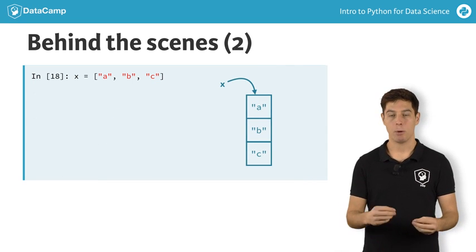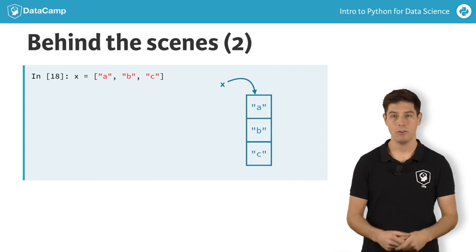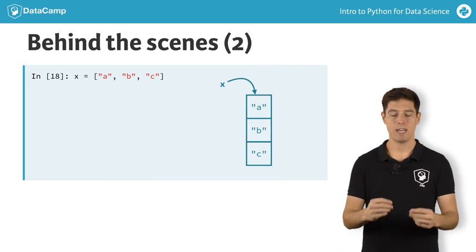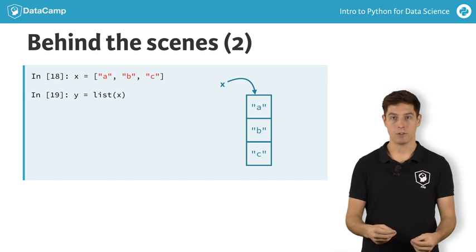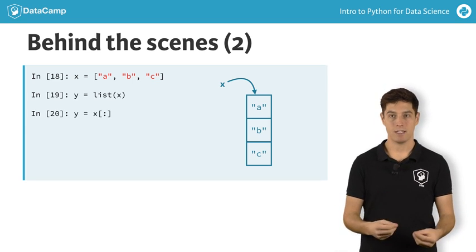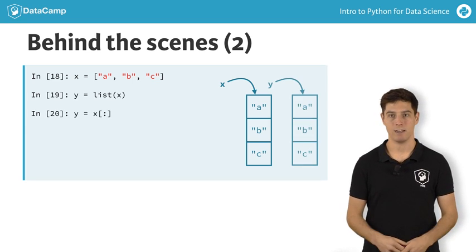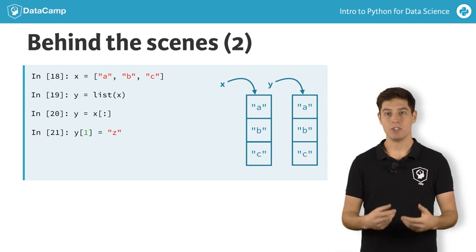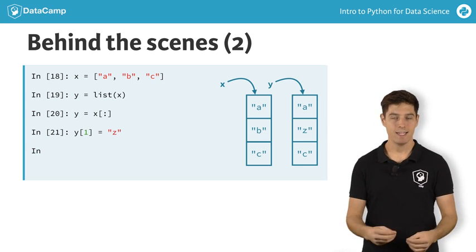If you want to create a list y that points to a new list in the memory with the same values, you'll need to use something else than the equal sign. You can use the list function like this, or use slicing to select all list elements explicitly. If you now make a change to the list y points to, x is not affected.